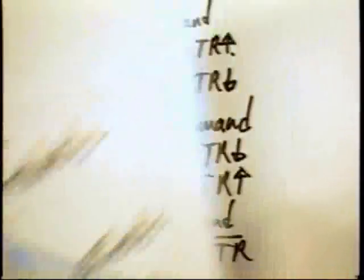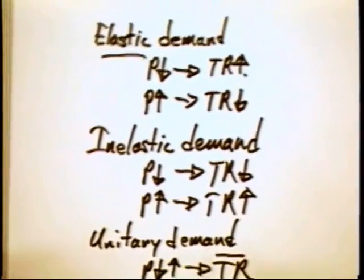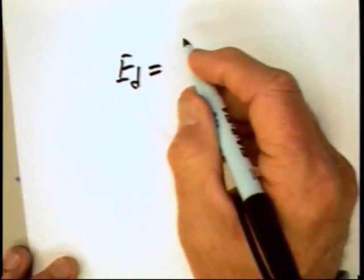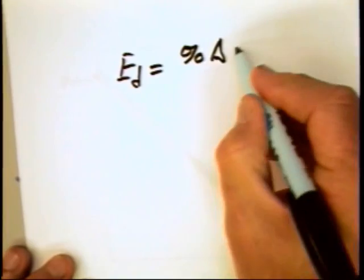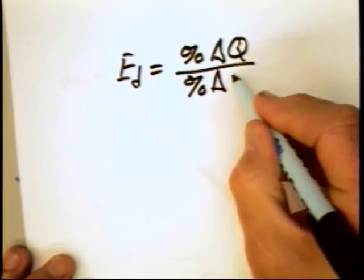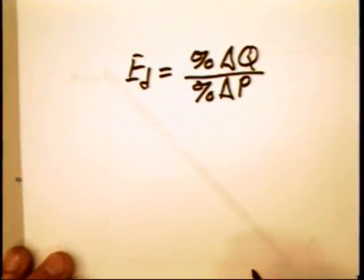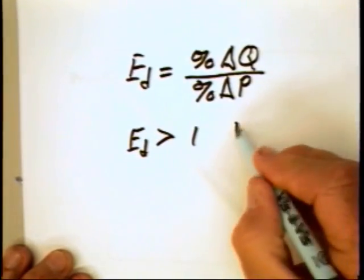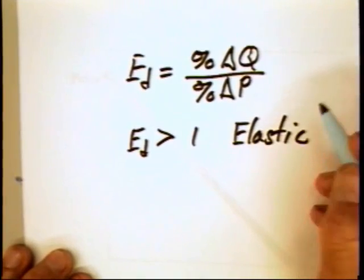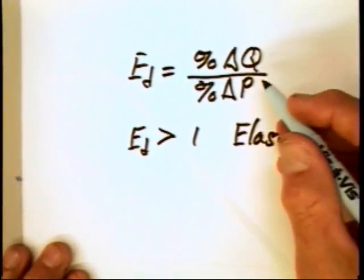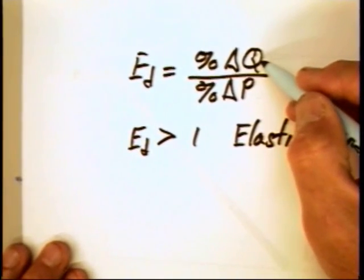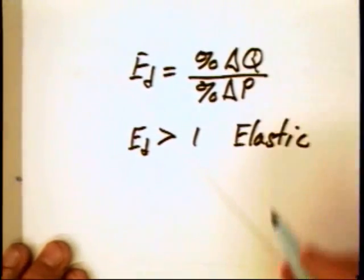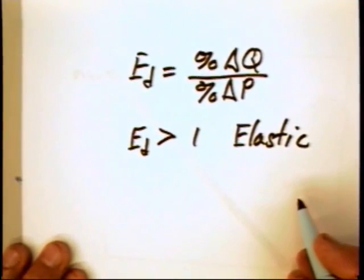There is an even better way of defining elasticity of demand — it's called the elasticity coefficient. The elasticity coefficient is the percentage change in quantity over the percentage change in price. If this coefficient is greater than one, it is elastic. That's understandable because if you lower the price by a given amount and the percentage change in quantity exceeds the percentage reduction in price, then total revenues can go up, which is consistent with our previous analysis.